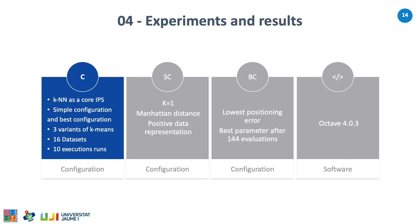Clustering has been explored many times in the IPS literature. However, the diversity in implementation details, evaluation criteria, and evaluation scenarios prevents credible comparisons using reported results. Thus, we created an experiment setup that includes k-nearest neighbor as the core IPS, two setups of hyperparameters for k-nearest neighbor — the best configuration and the simple configuration — three variants of k-means, 16 datasets, and 10 execution runs. The clusters were randomly generated ensuring that k-means and the three variants share the same initializations for each dataset and execution run.